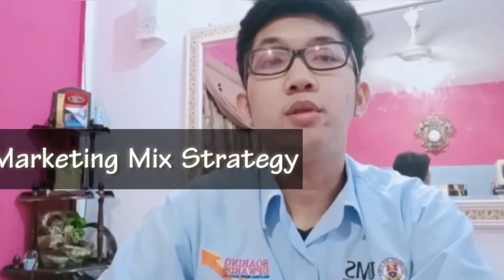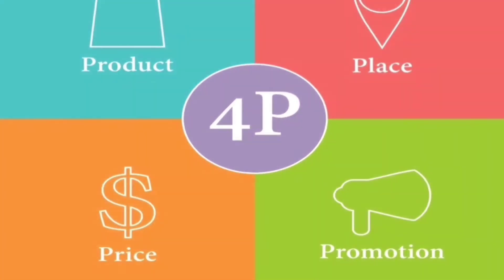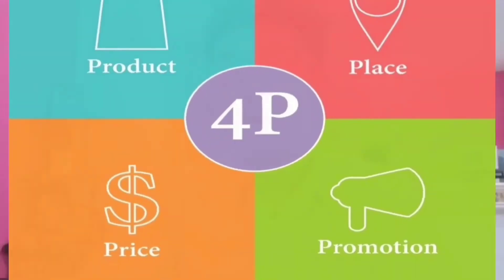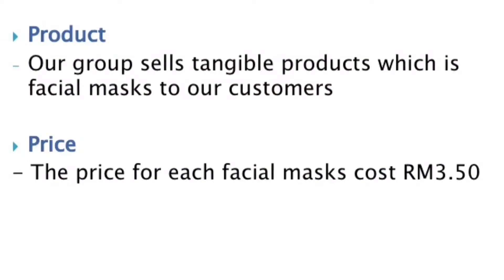Hi and a very good day. I will explain about the marketing mix strategy, which is the 4 Ps. The 4 Ps stand for product, price, promotion, and place. For product, a product can either be tangible or intangible — if intangible, it means services. As for our group, we give tangible products to our customers. Our group serves facial masks to our customers because nowadays people care about their looks and their beauty.